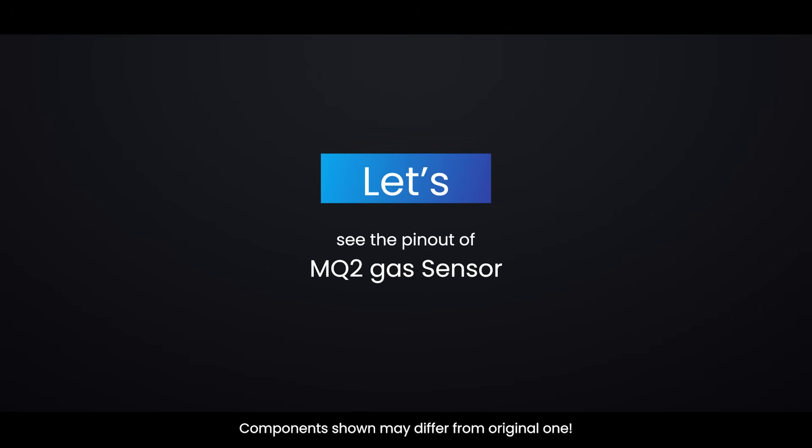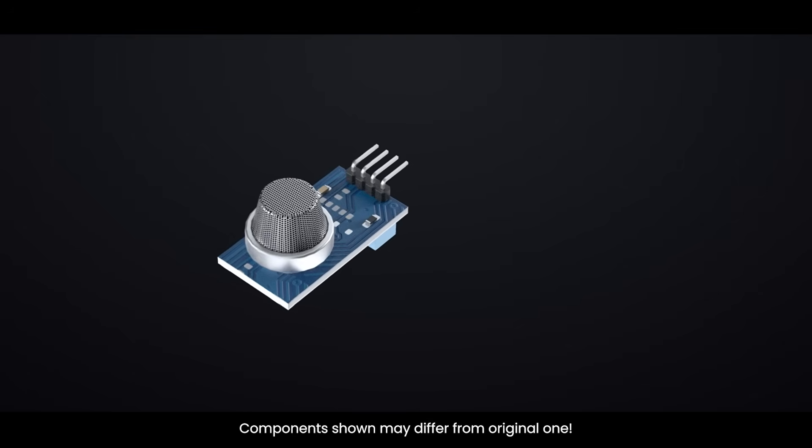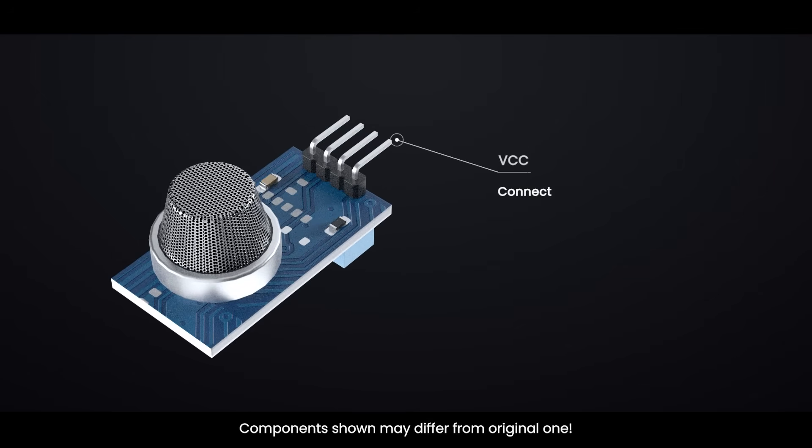Let's see the pinout of MQ2 gas sensor. VCC provides power to the sensor. Connect it to the 5V output on your Arduino. GND is the ground pin. AO, analog output, gives a variable voltage that corresponds to the concentration of gas. DO, digital output, outputs a low signal when the gas concentration is above the threshold set by the potentiometer and a high signal when it's below.